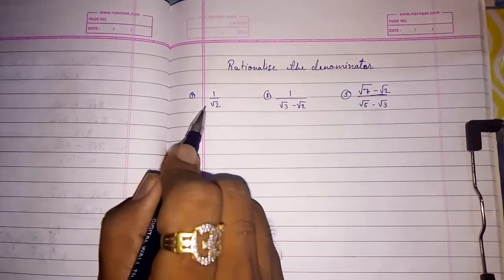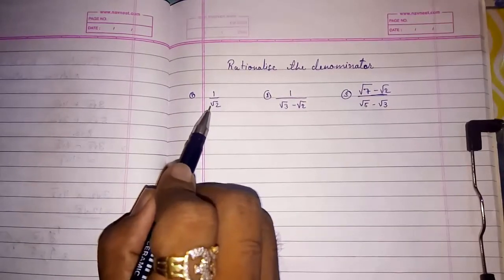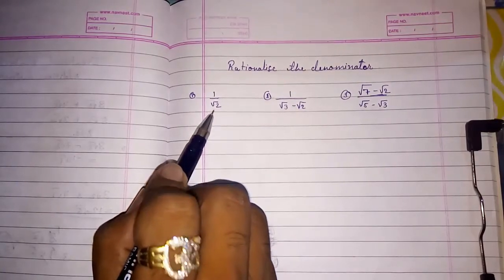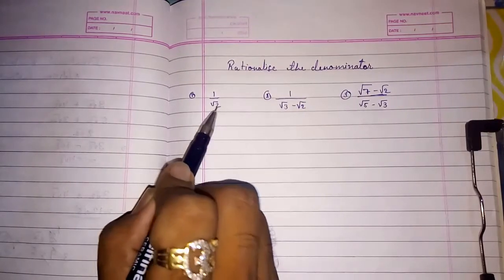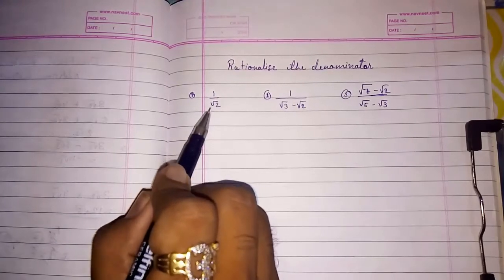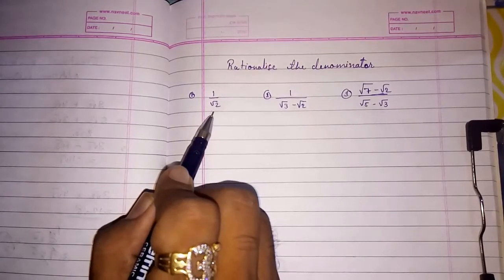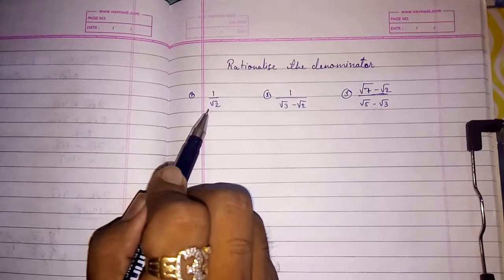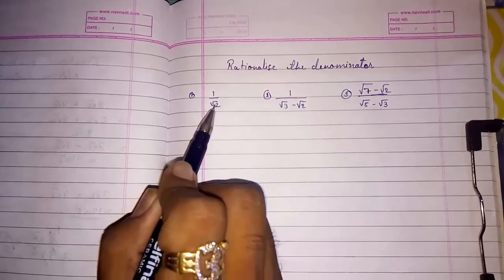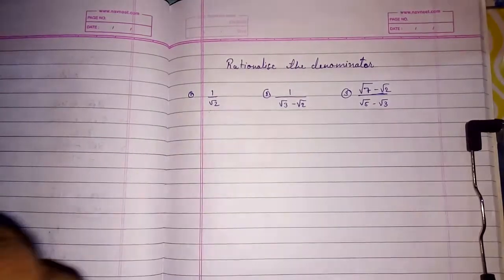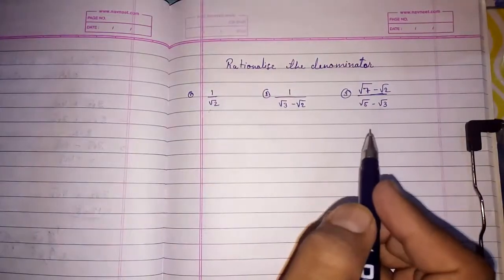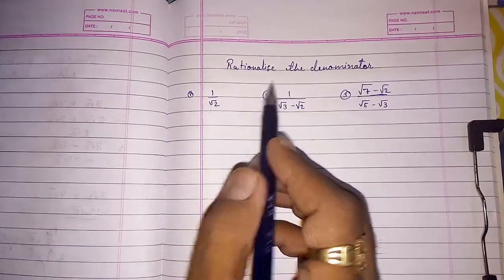Whenever you find any root numbers in the denominator, you cannot put it as the final answer. Root is not possible in denominator. If they are giving you, then we have to remove that root. How we can remove that we are going to study and that process is called rationalization.